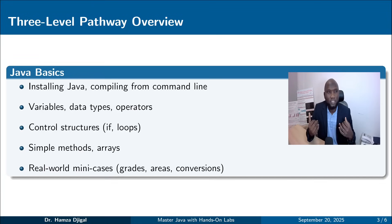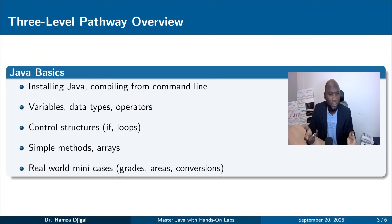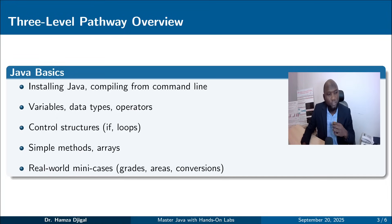We have divided this overview into three steps or pathways. The first is Java basics, where we cover the installation of Java, how to compile from the command line, variables, data types, and operators. Before introducing each concept I will help you understand what it means in real life. Then we move to control flow — if conditions, loops — and methods. At the end we'll give case studies: problems to solve like building a grade application, calculating areas, or doing conversions.